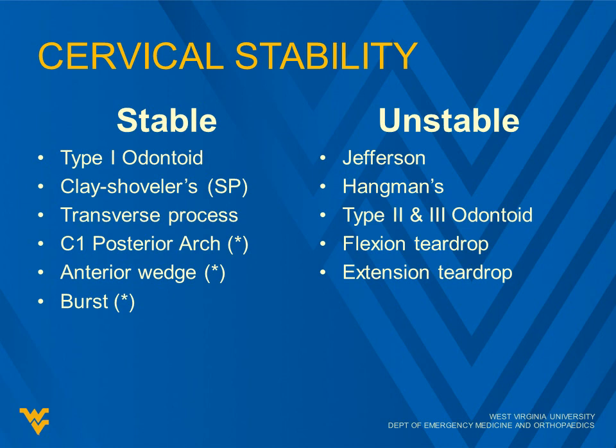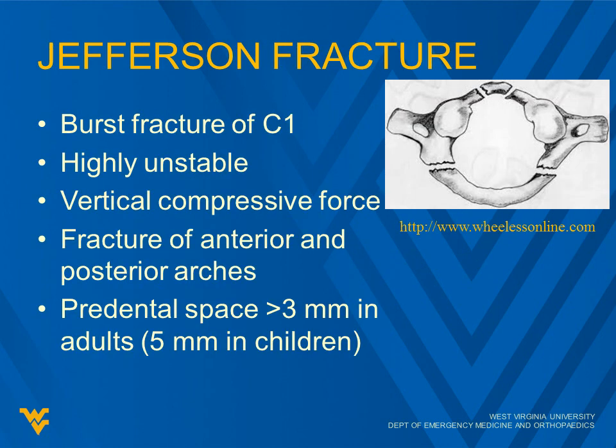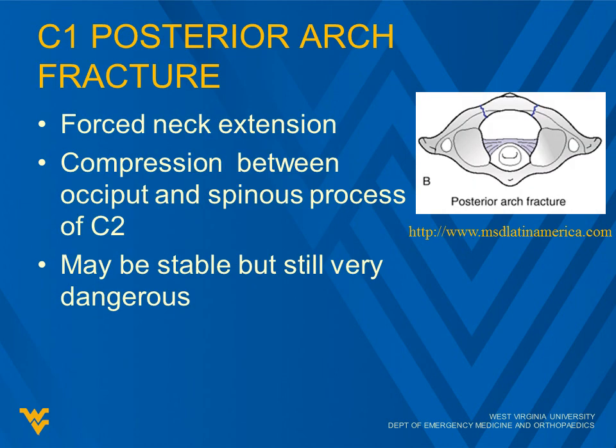In orthopedics we really love our eponyms, so get familiar with a few of these. A Jefferson fracture is a burst fracture of C1 — highly unstable, caused by a vertical compressive force, with fracture of the anterior and posterior arches. The pre-dental space is greater than three millimeters in adults or five millimeters in children, which would be abnormal. We'll move through a lot of these; you can jump back and review them as needed.